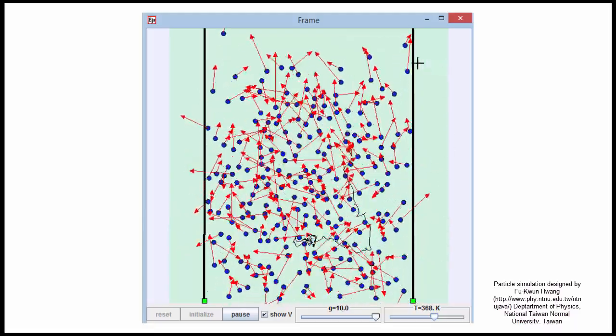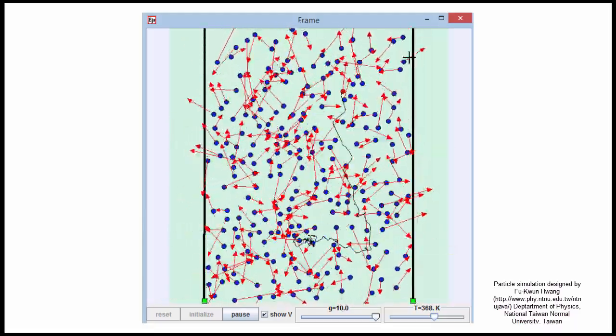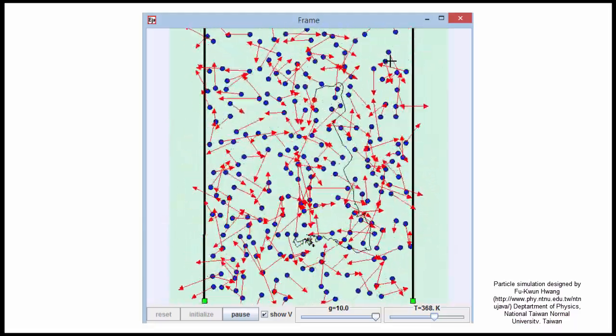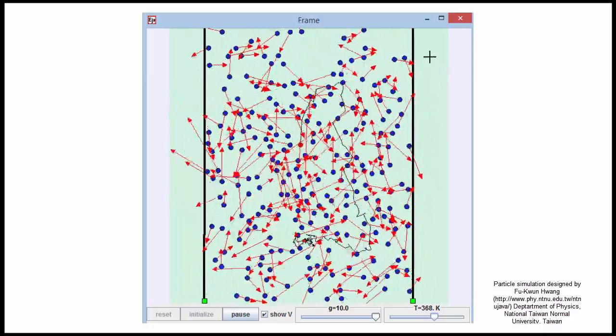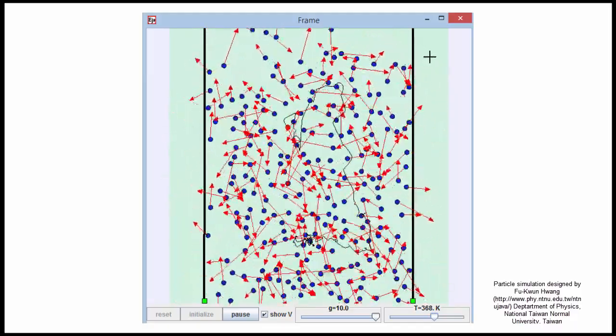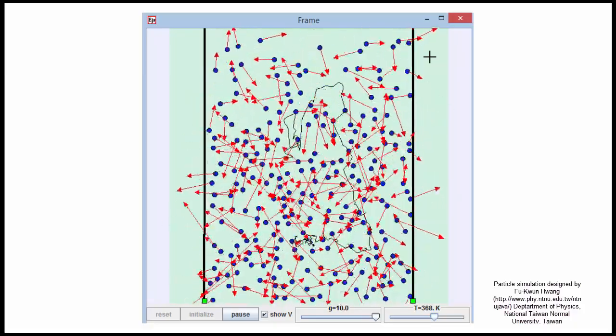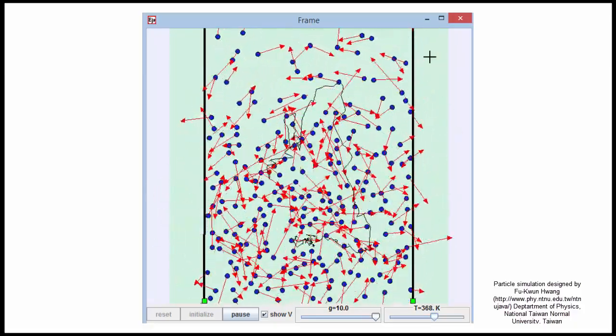And since we know that faster speeds correspond to higher kinetic energies, we can produce a graph that shows the frequency of particles for all possible values of kinetic energy. This graph corresponds to a mathematical distribution known as the Maxwell-Boltzmann distribution, that has this particular shape.